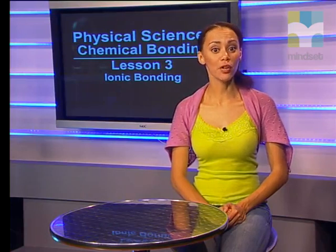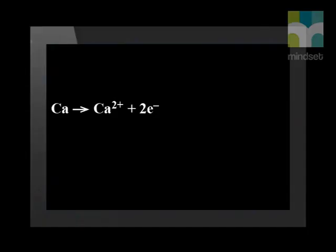When atoms lose or gain electrons, they do so to attain a full electron energy level, like the very stable atoms of the group 18 noble gases. The charge on the ion is numerically related to the number of electrons transferred. If two electrons are transferred, the charge will be plus two. If three electrons are transferred, the charge is plus three.